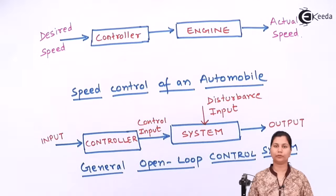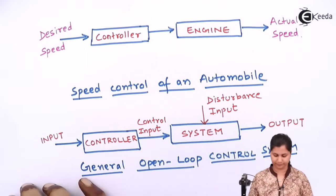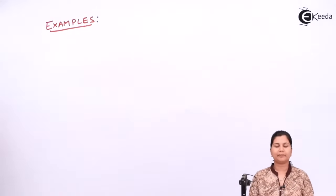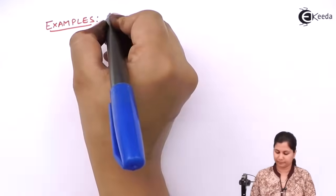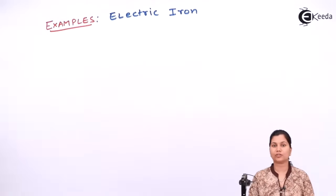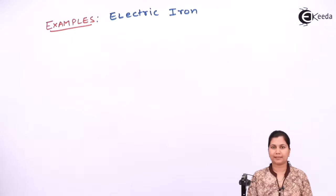Let's see some examples of open-loop control systems from our daily life. The first example of an open-loop control system is the electric iron which we see in our home. Remember that this is not the automatic electric iron — this is the simple electric iron. The input is the power supply, which is connected to the electric iron, and the output of the electric iron is the heat. So it is an open-loop control system.